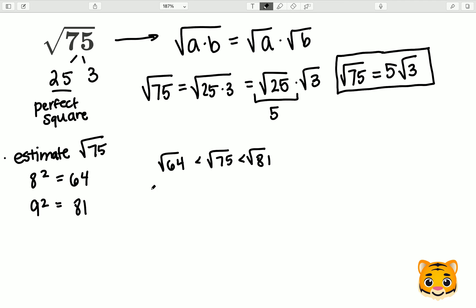Because 8 squared equals 64, we know the square root of 64 is 8. And because 9 squared is 81, we know the square root of 81 is 9. Therefore, the square root of 75 lies between 8 and 9.